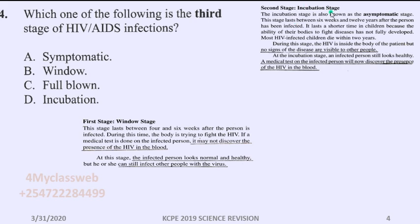Now let us look at the second stage, which we call the incubation stage, also known as the asymptomatic stage. This stage lasts between six weeks and twelve years after the person has been infected. It lasts a shorter time in children because the ability of their bodies to fight diseases has not fully developed, and most HIV-infected children die within two years.